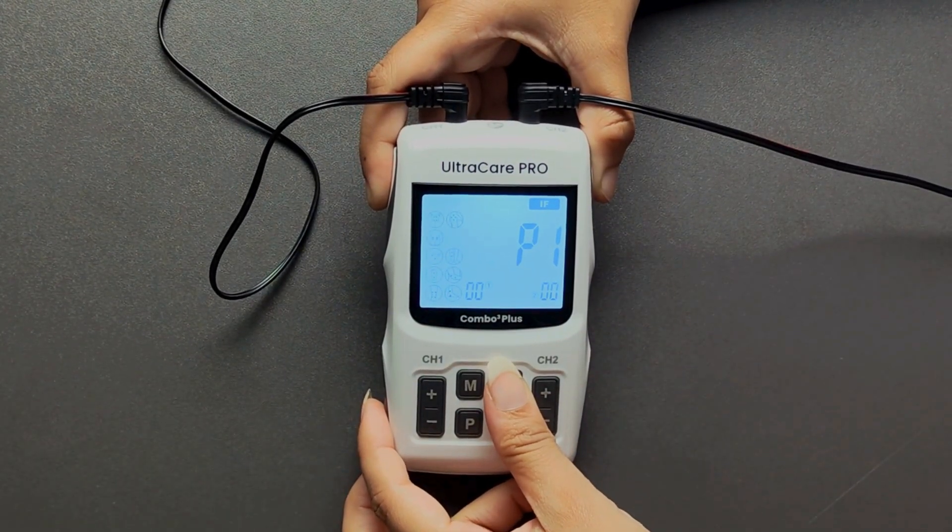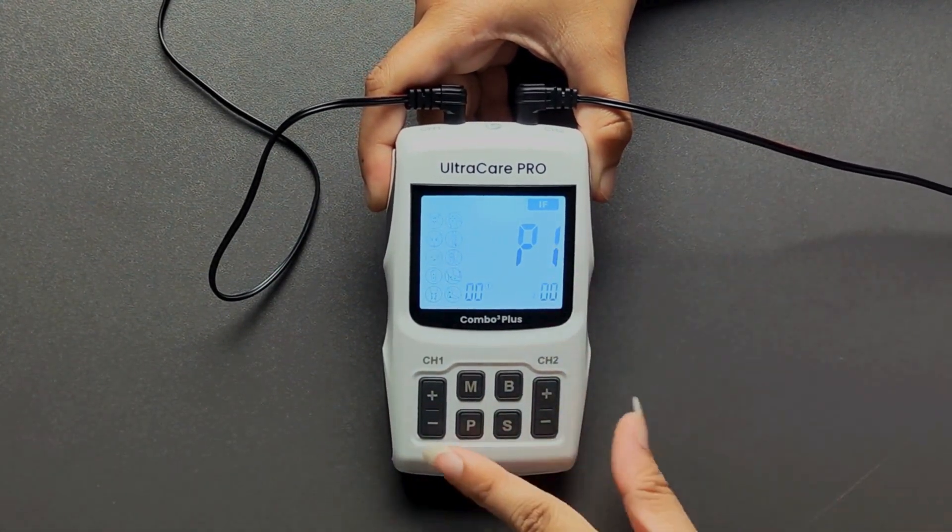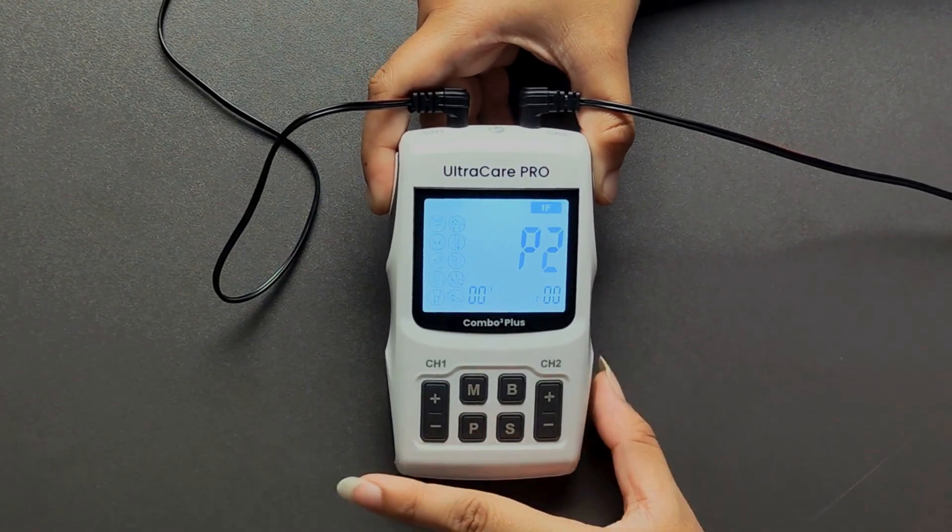Press B to choose the body part you want to treat and press P to select the program type from P1 and P2.